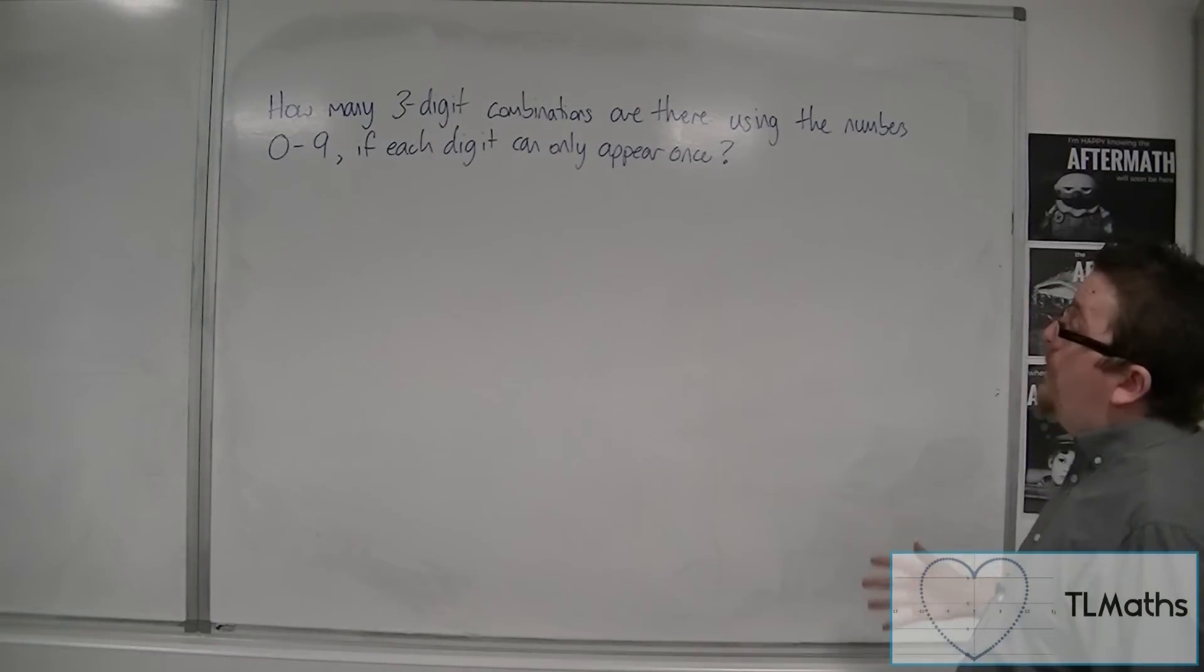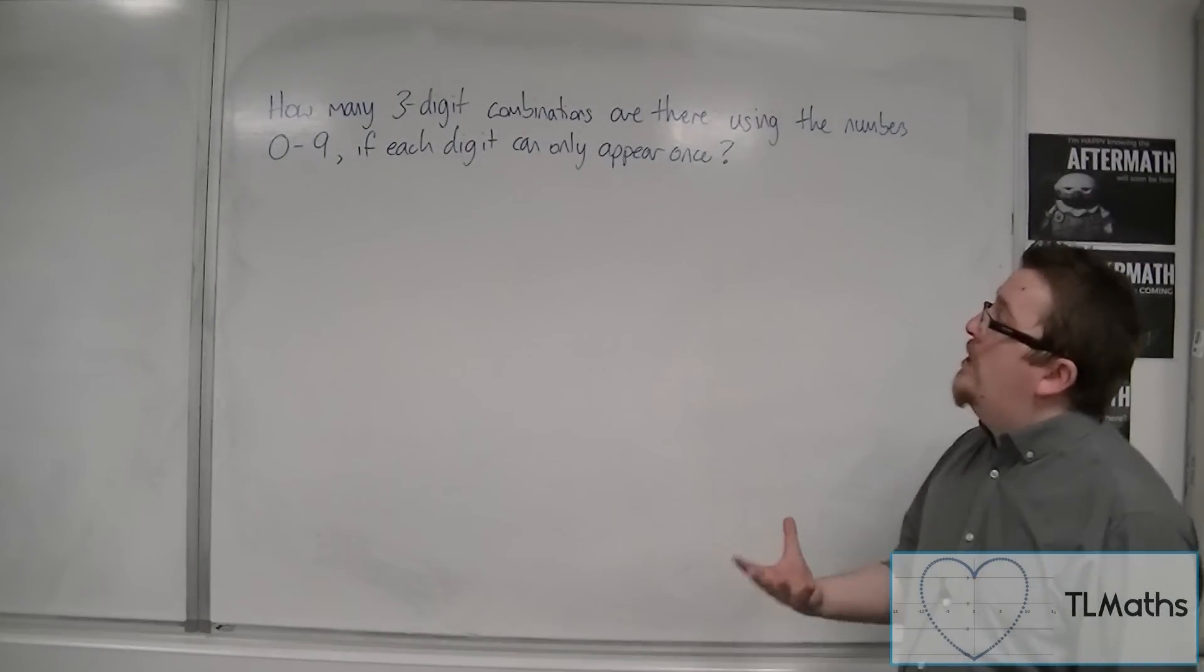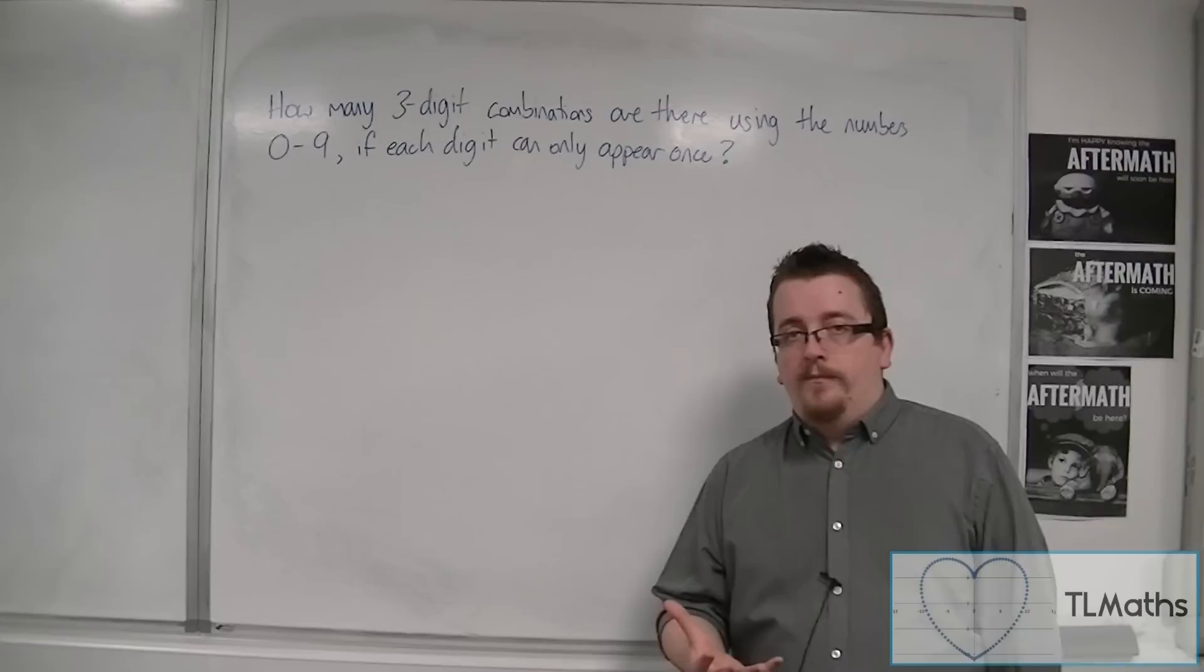How many three-digit combinations are there using the numbers 0 to 9 if each digit can only appear once?